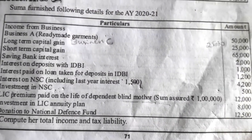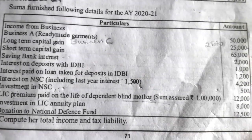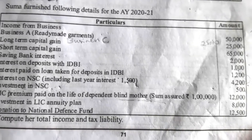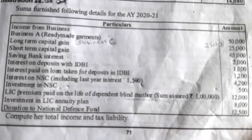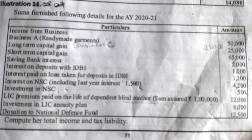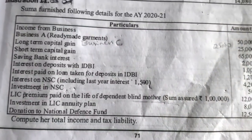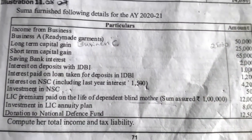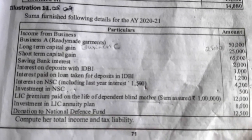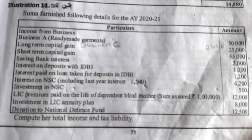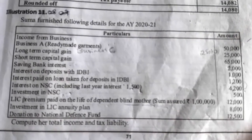Next, investment in LIC annuity plan — for this rupees 8,000 investment in LIC annuity plan she can claim a deduction under Section 80CCC. Under Section 80CCC she can claim a deduction for the LIC annuity plan, that is 8,000. Next, donation to National Defense Fund — for this she can claim a deduction under Section 80G, that is 12,500. NDF is without limit — 100 percent — so she can claim 100 percent deduction for this donation.